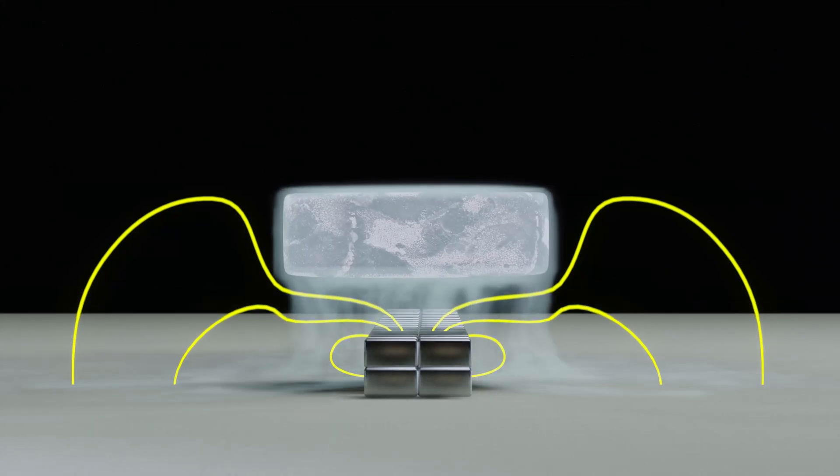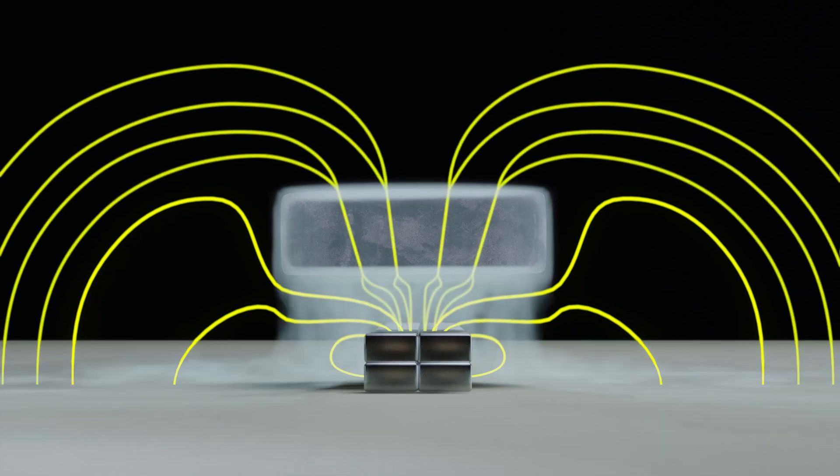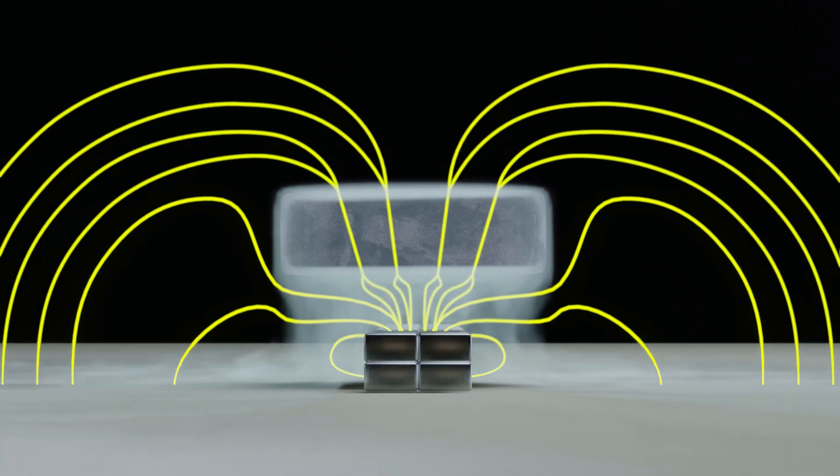However, a special type of superconductor, known as a type 2 superconductor, lets a small part of that flux pass through, generating a second physical phenomenon known as flux pinning.